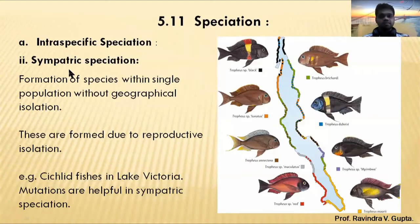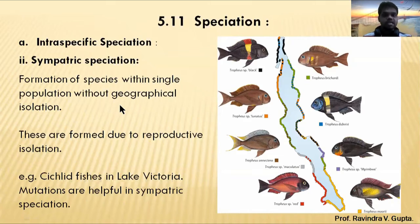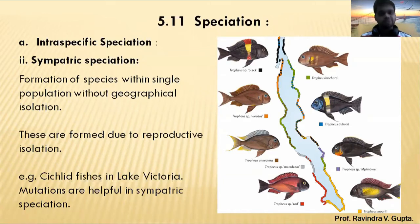The second type of intraspecific speciation is sympatric speciation. In allopatric speciation, one species is isolated and forms different species. In sympatric speciation, new species are formed within a single population without geographical isolation.